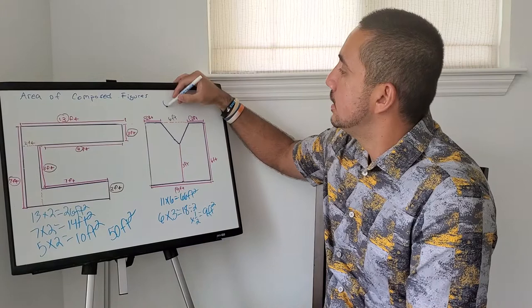66 minus 9, our final answer is 57 feet square.